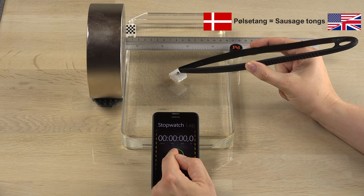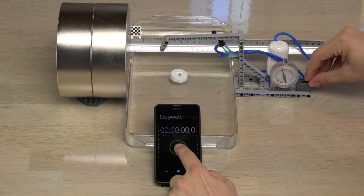Pølsetang being Danish for sausage tongs. All right. Here's the first test with the 1 gram sample.